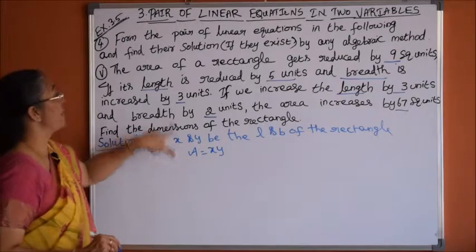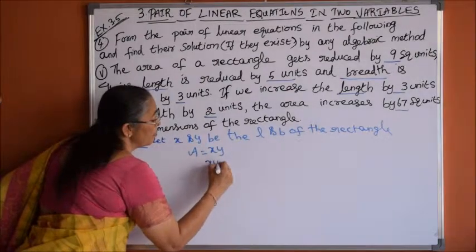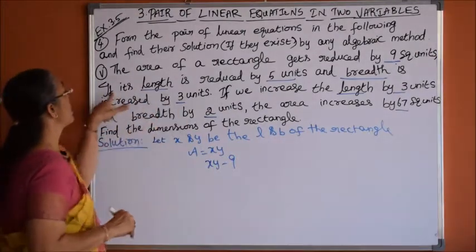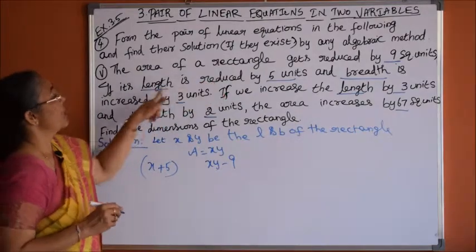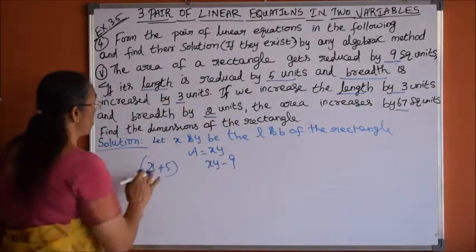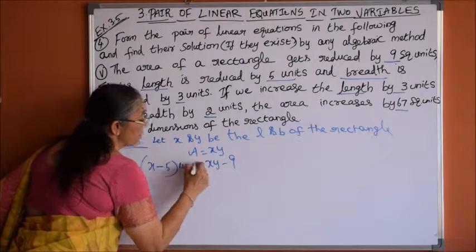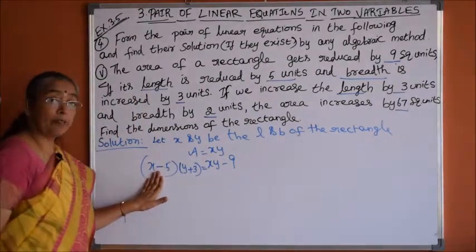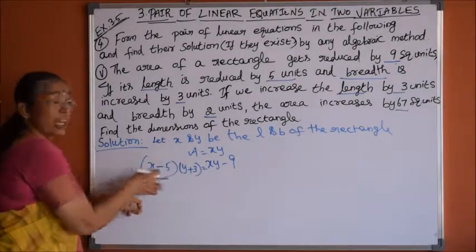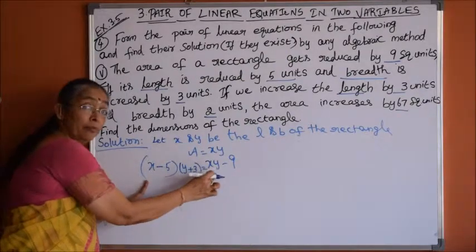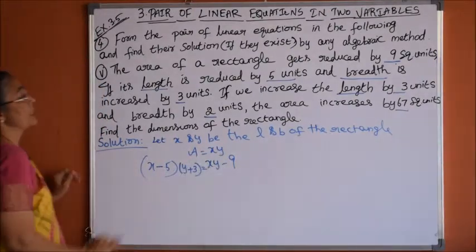Now what happens to this original area — first condition: the original area gets reduced by 9 square units. The xy will become reduced by 9 square units. The length is reduced by 5 units, which is x minus 5, and breadth is increased by 3 units, y plus 3. So the changed area (x minus 5)(y plus 3) equals the original area minus 9, that is xy minus 9.